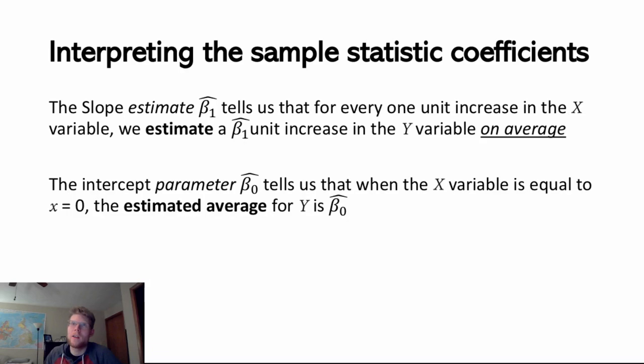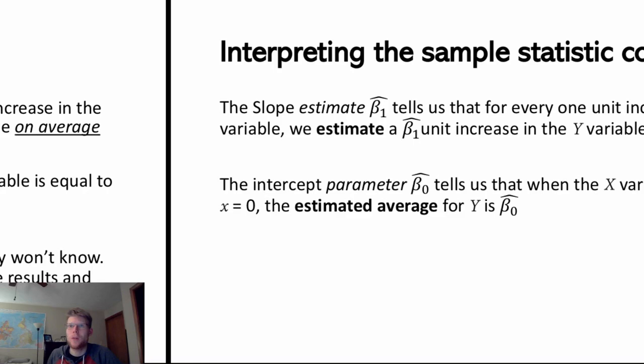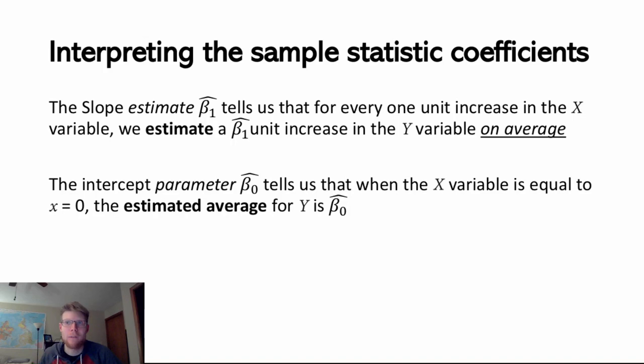When interpreting our sample statistics, in the case of beta hat 1, for every 1 unit increase in the x variable, we estimate a beta hat 1 unit increase in the y variable on average — so we're estimating the average rate of change rather than stating it definitively. For the intercept beta hat 0, it's the estimated average for y when x equals 0. These are estimates, whereas the parameters beta 0 and beta 1 represent what these values actually are.